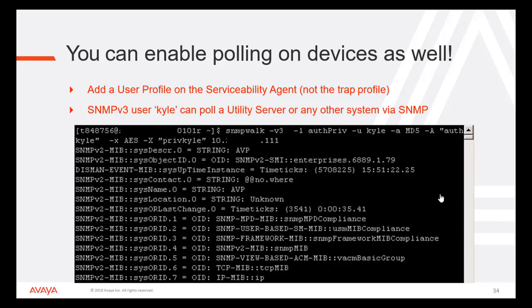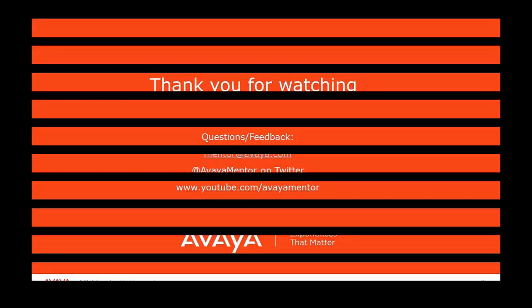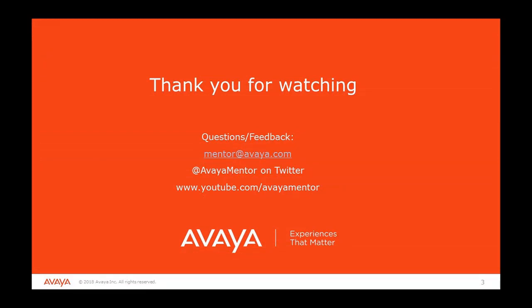Once the profile is added, you can run an SNMP walk from any other Linux server to System Manager or to the agent where you have enabled the SNMPv3 profile, and you should receive SNMPv2 or v3 MIB files as shown in the screen capture. In summary, System Manager acts as central management of alarming and polling for Avaya Aura products. Serviceability Agents are a crucial element for proper system monitoring. System Manager offers flexibility of sending certain alarms to certain destinations. AVP alarming is specifically tuned to Avaya's use cases and is standardized across deployments. Thank you for your time. We welcome comments, questions and feedback at mentor@avaya.com or on Twitter at @AvayaMentor. For more details, please visit support.avaya.com.